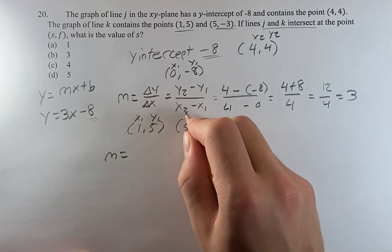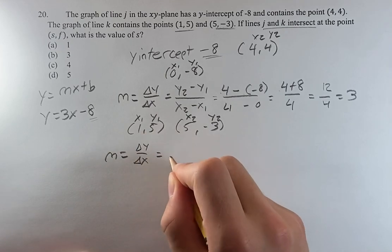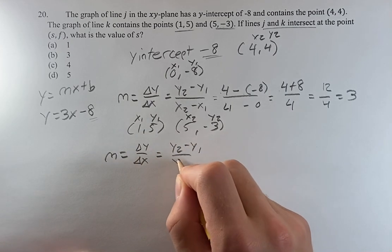We do x1, y1, x2, y2. Same sort of thing. Delta y over delta x is equal to y2 minus y1 over x2 minus x1.